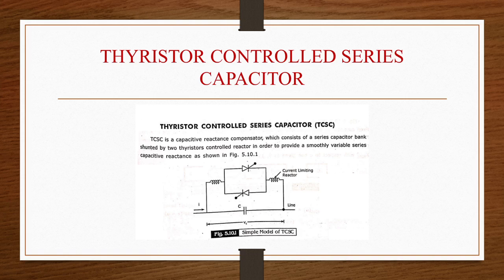When we see the basic FACTS controllers — series, shunt, combined series-series and combined series-shunt — series controllers will be a variable impedance such as capacitor, reactor, etc., or a power electronics-based variable source. As long as the voltage is in phase quadrature with the line current, the series controller will supply or consume variable reactive power. Series controllers are of two types: TCSC (thyristor-controlled series capacitor) and SSSC (static synchronous series compensator).